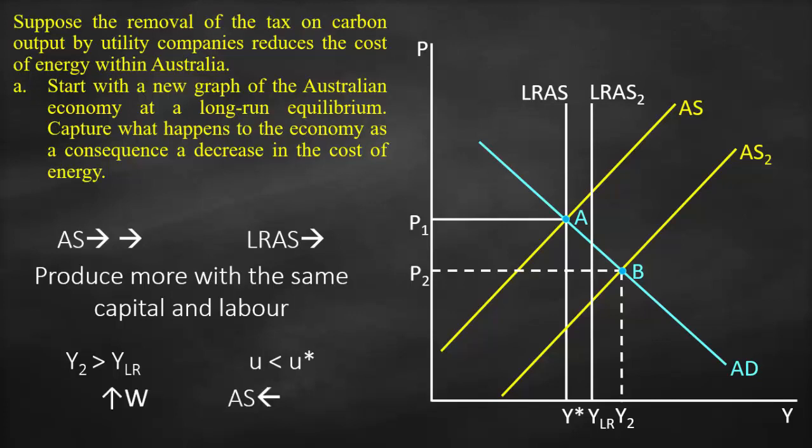So what will happen is nominal wages will rise, which means companies will be reluctant to produce more. Consequently, the aggregate supply curve will shift to the left in order to reach our equilibrium. So the short-run aggregate supply curve will shift to the left until it intersects with long-run aggregate supply 2 and aggregate demand at point C.